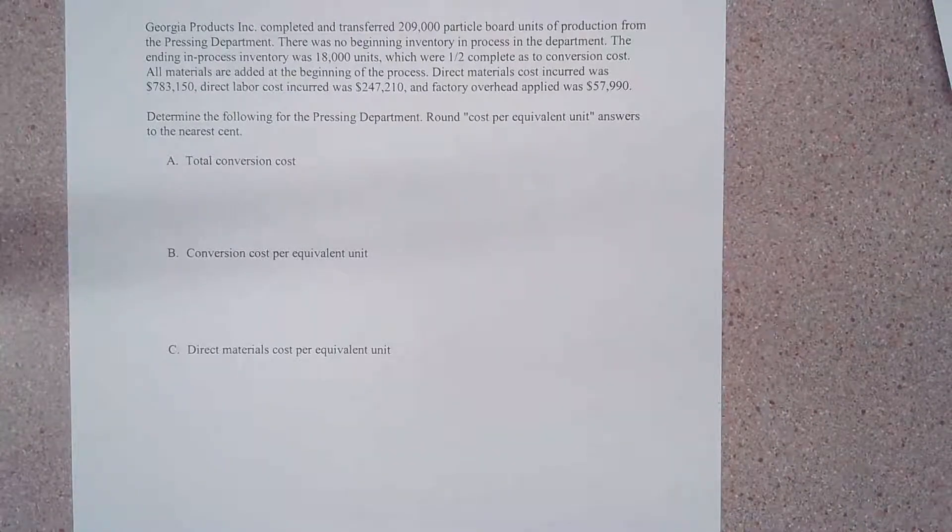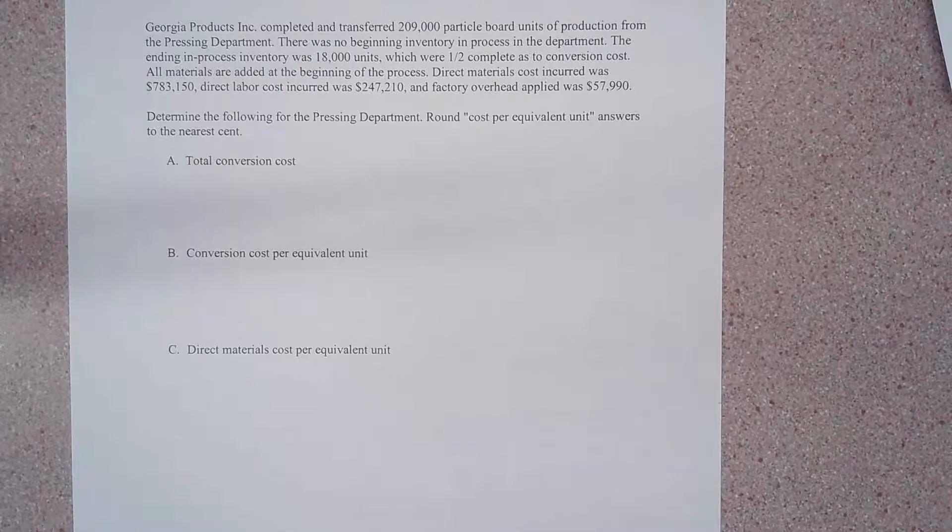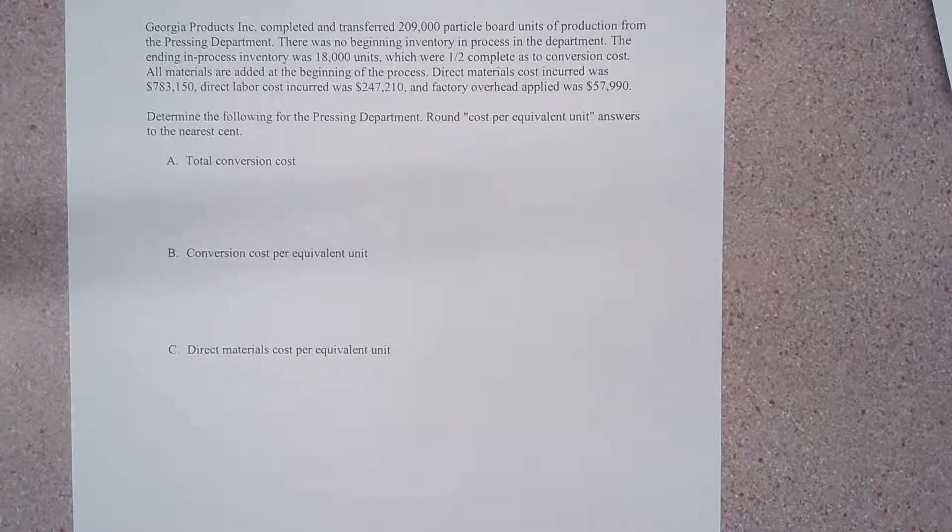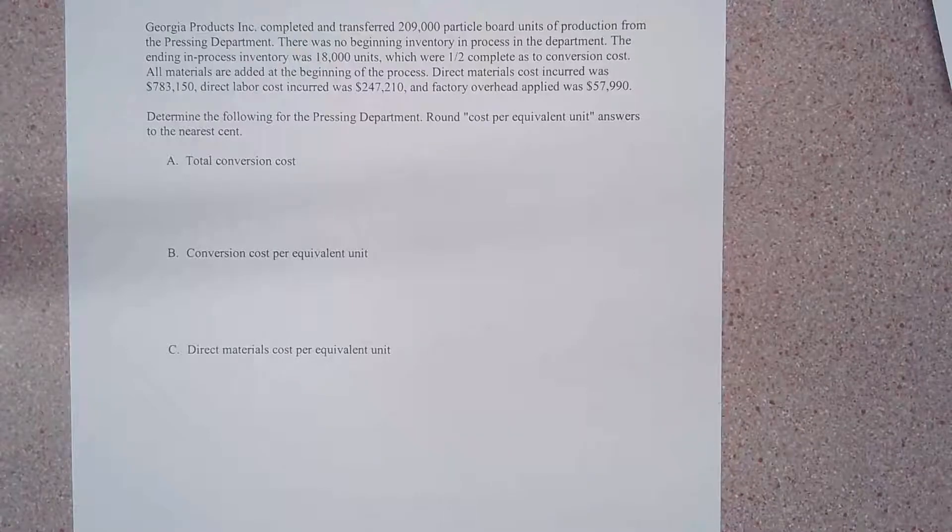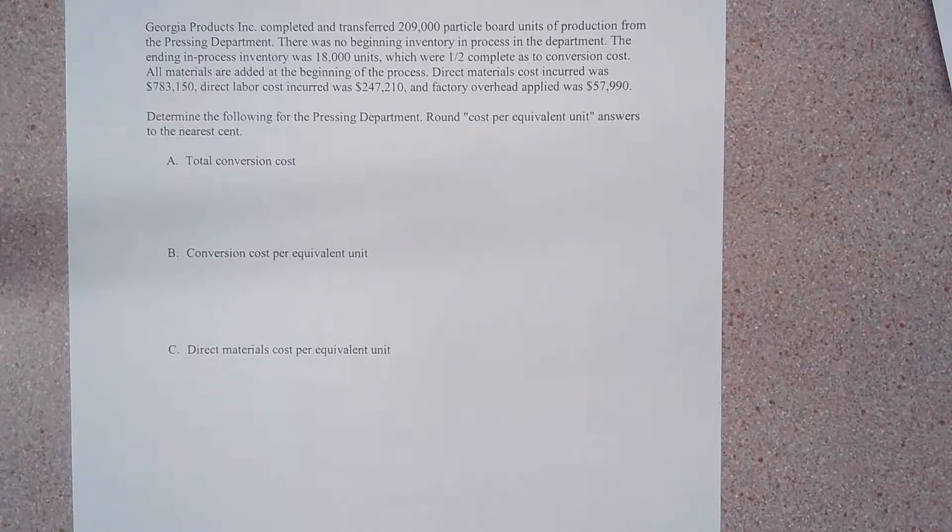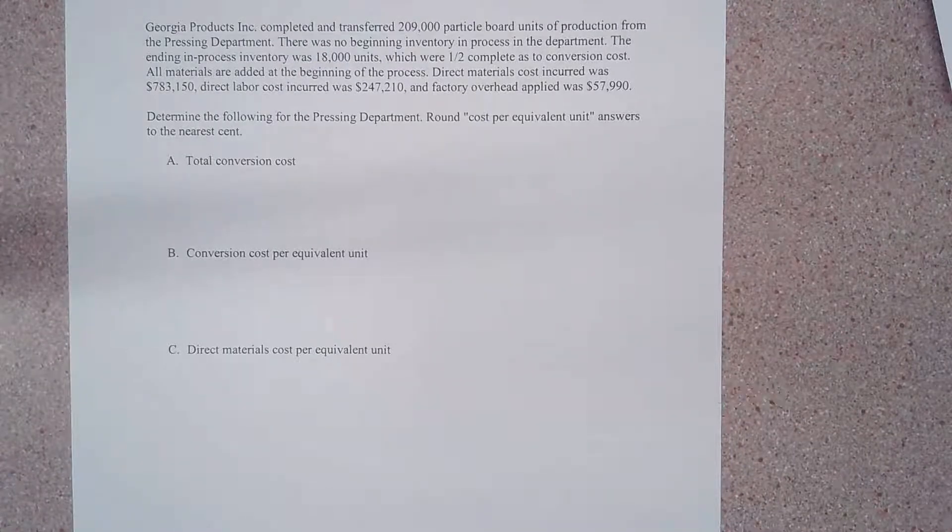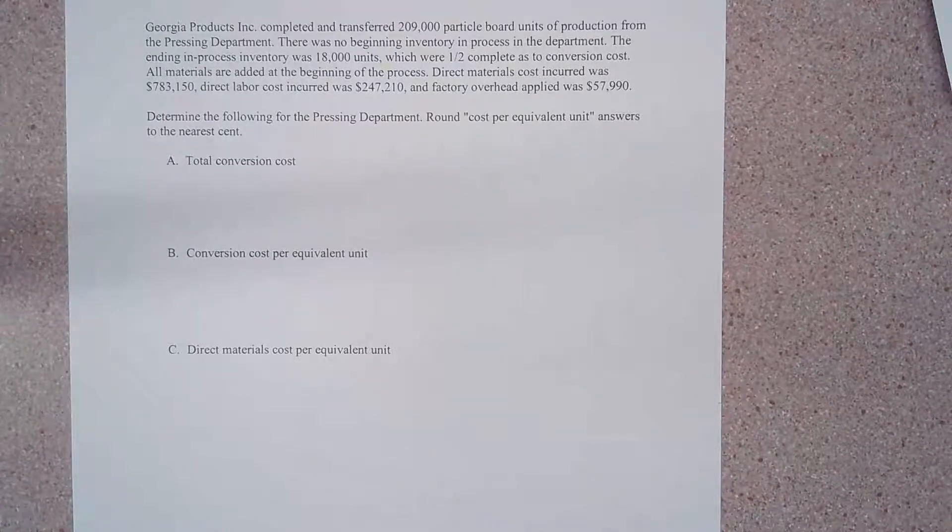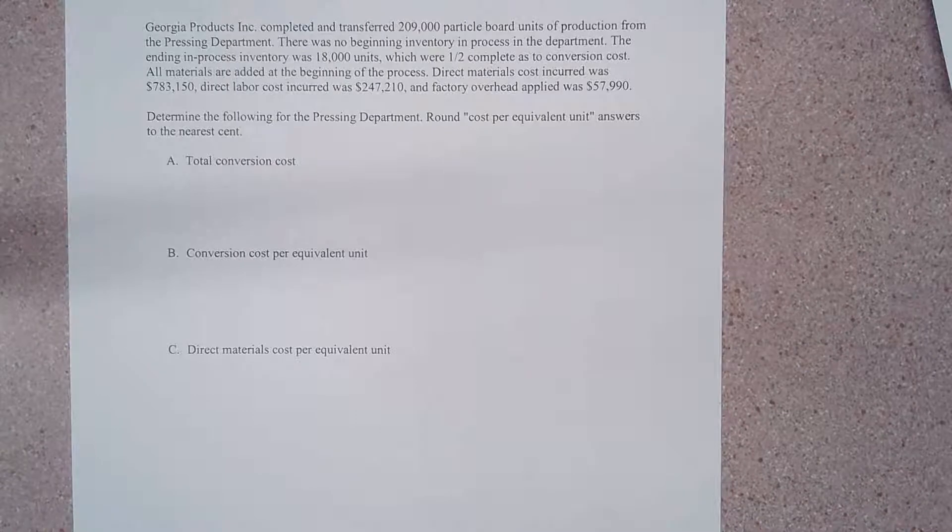The ending work in process, or the ending in process inventory, was 18,000 units which were half or 50% complete as to conversion costs. Similar to the last problem we had, all materials are added at the beginning of the process.